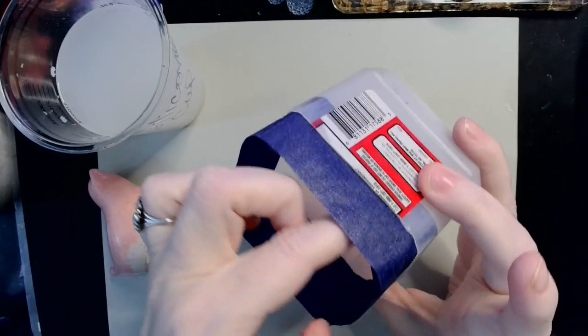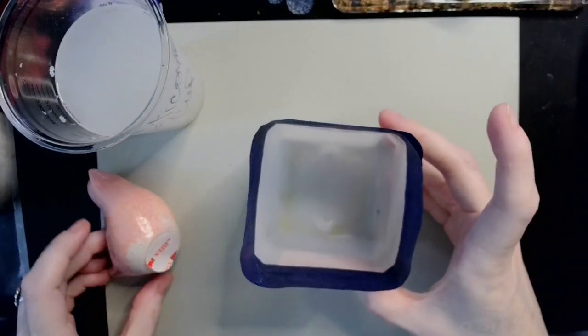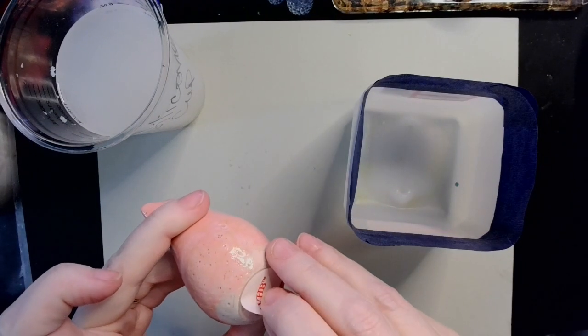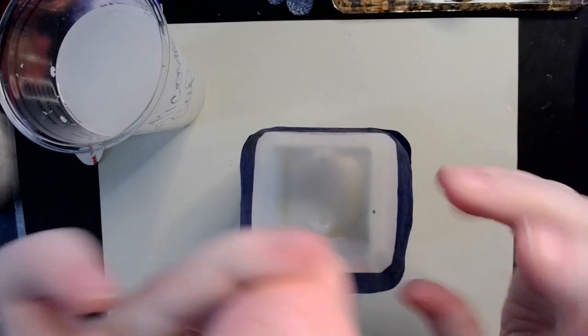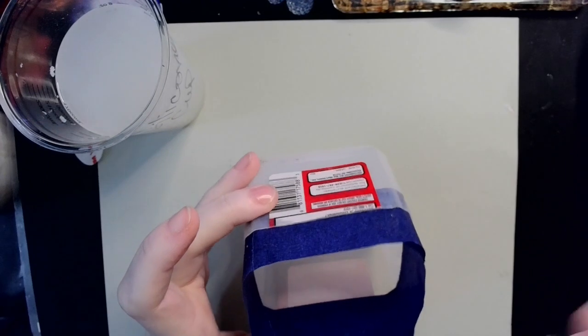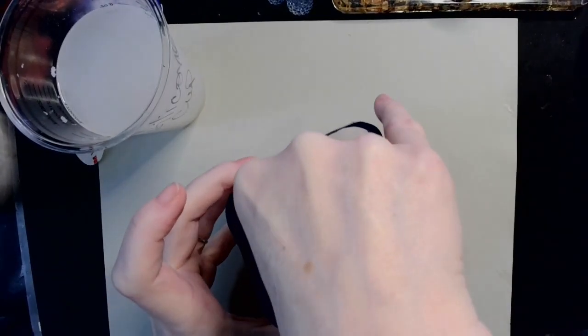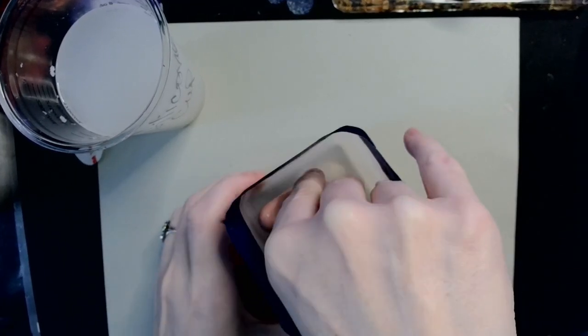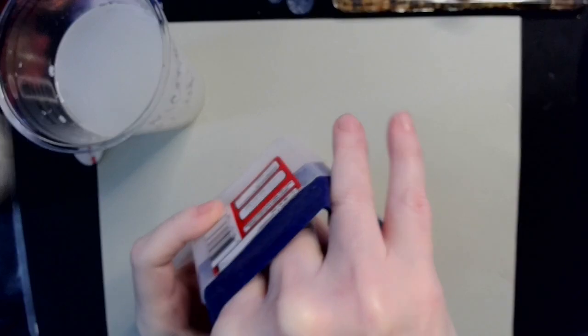Say hi to Captain Critter. We got the tape taken off the bottom and we are going to stick our little bird inside of our silicone mold, formerly known as isopropyl alcohol container.